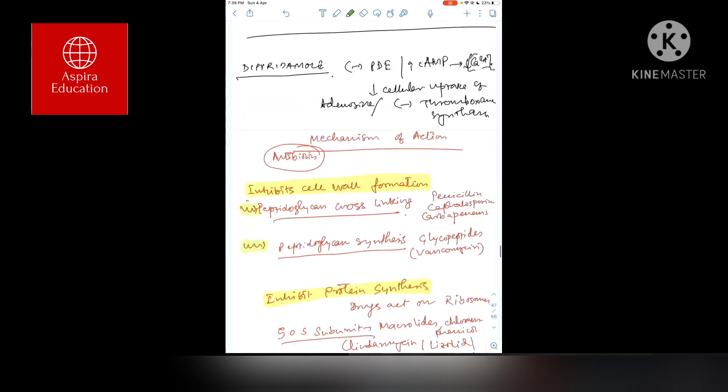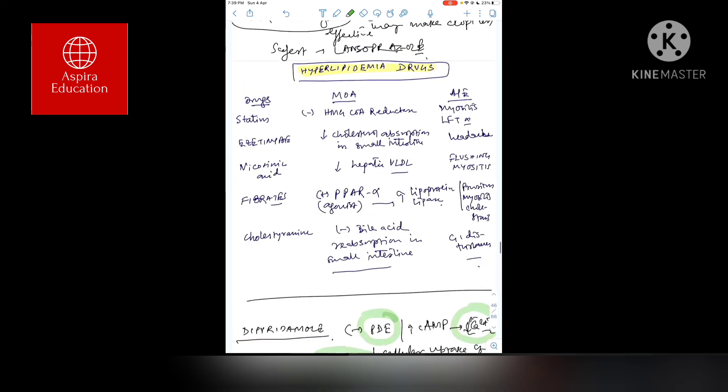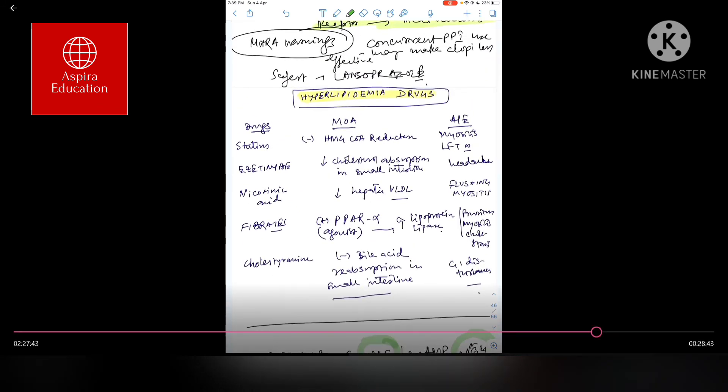Dipyridamol is not used much nowadays. It's a phosphodiesterase inhibitor that decreases intracellular calcium and ultimately decreases cellular uptake of adenosine, blocking thromboxane synthesis - basically antiplatelet. In previous guidelines it was used with aspirin, mostly in prevention and secondary prevention of CVA or TIA. Not many questions come on this basis, but hyperlipidemia drugs are important.